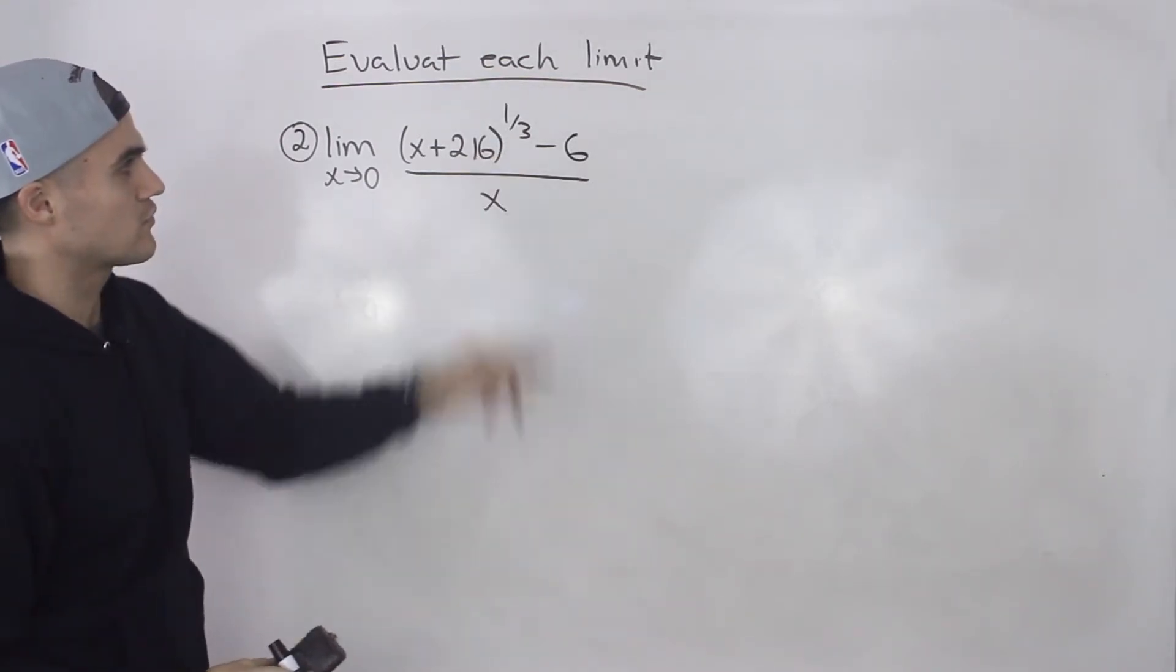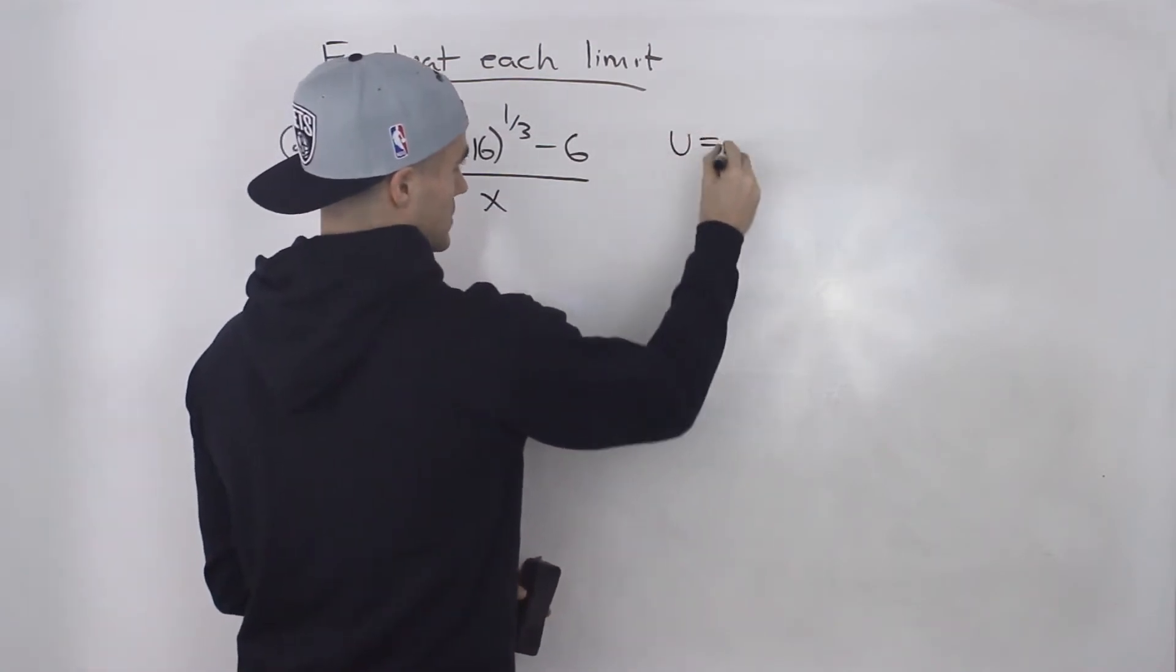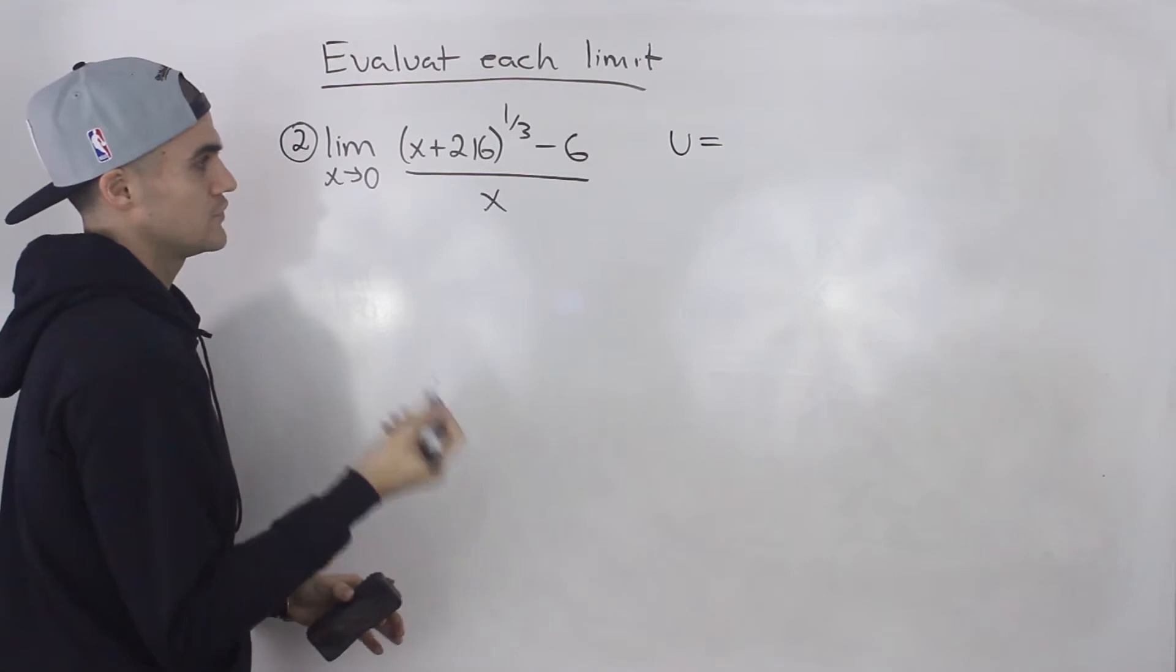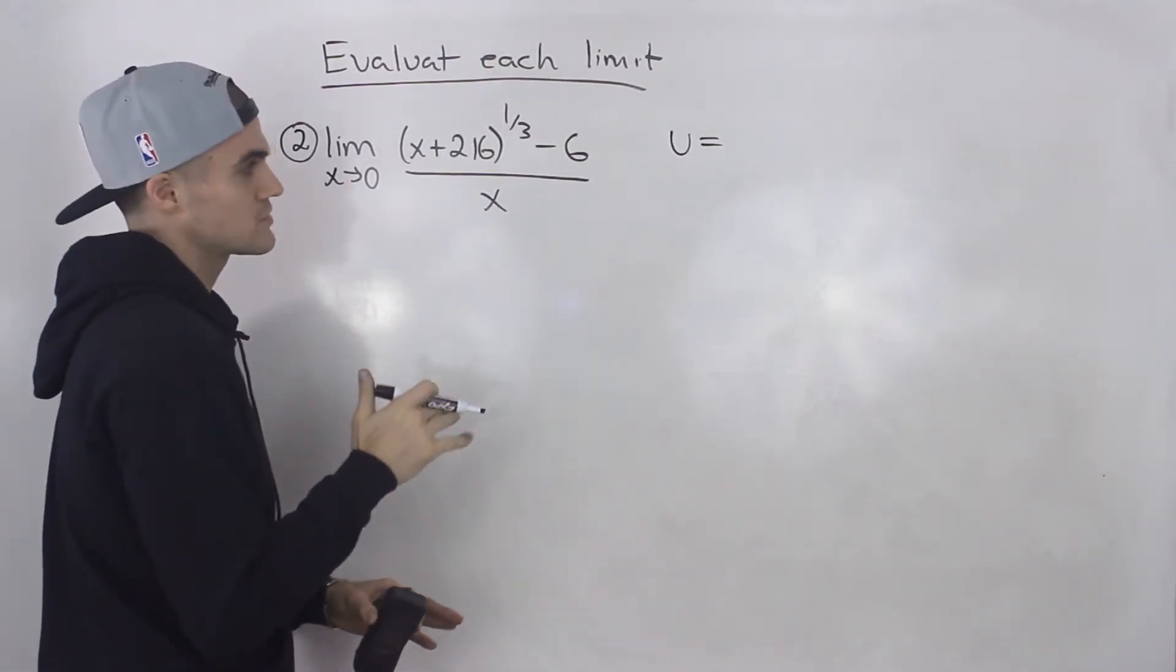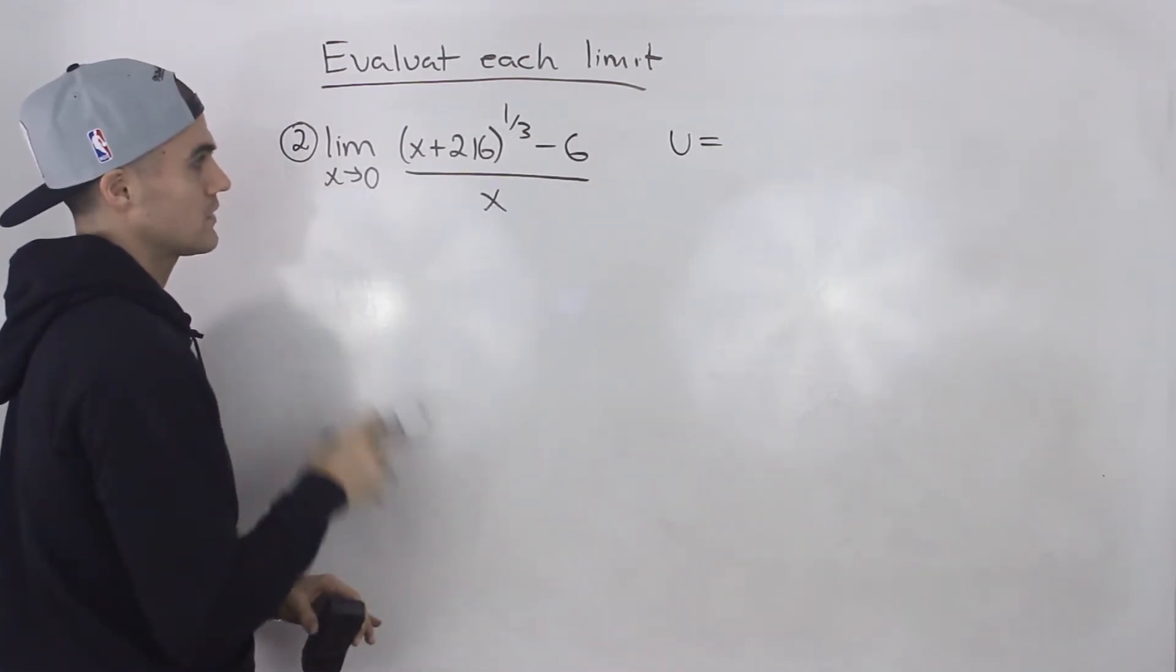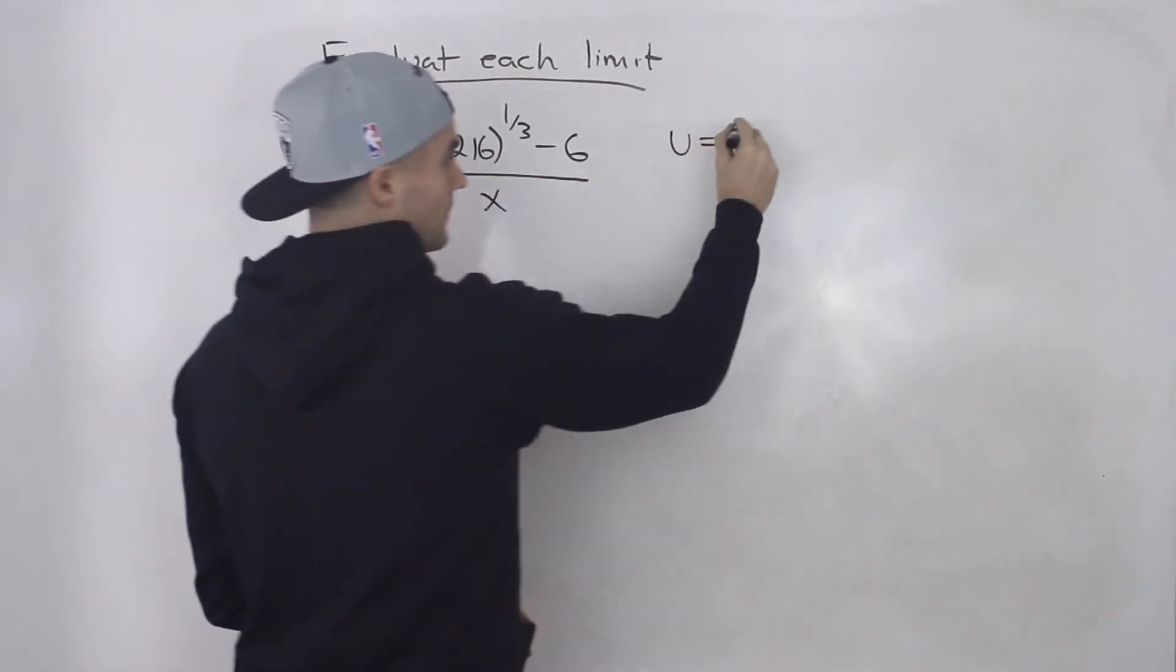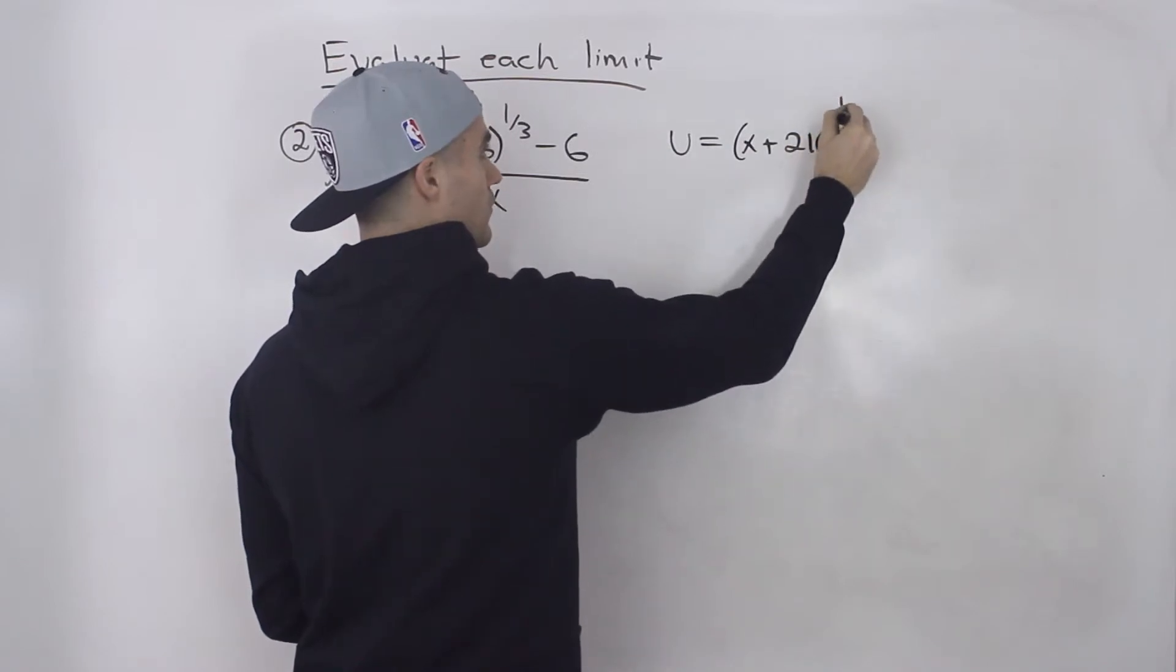Now since we have this fraction one over three, we know that we're going to most likely have to do a change of variable. And if you didn't go over the change of variable strategy in the lecture videos, I go through tons of examples there. Make sure you go over that before doing this question.